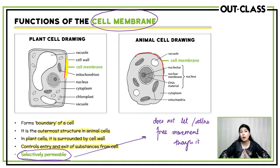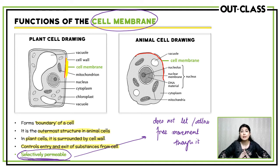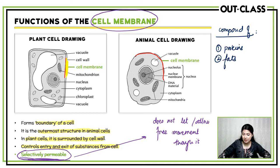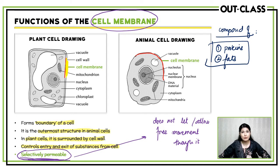We'll discuss in subsequent units why selective permeability is so important for the cell. For now you should know: the cell membrane is the boundary, it is selectively permeable, it is the outermost structure in animal cells, and definitely not the outermost structure in plant cells because it is surrounded by the cell wall. You should also know what the cell membrane is composed of — two things: proteins and fats. Those are the two components of the cell membrane.